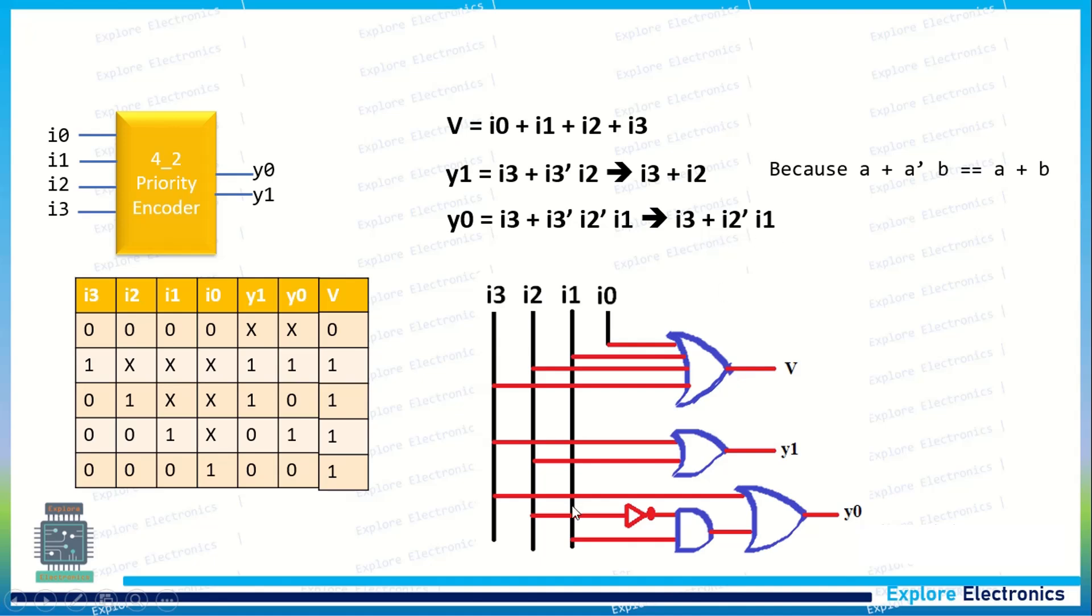And then y0 will be having i3 + i2̄·i1. So i2̄ is taken, i1 is taken, and the AND gate output will be given to a next OR gate where i3 comes.